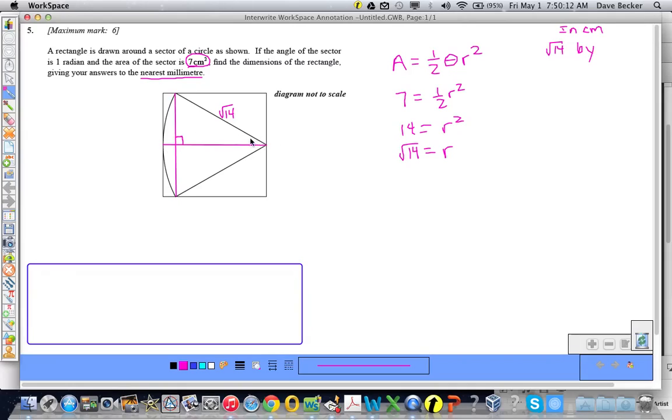I also have bisected the angle of the sector, so I know that this angle is equal to one-half. I'm going to say this is triangle ABC. We'll call this the length of the rectangle and this is the width. And I think you'll agree with me that the width is equal to 2AB.